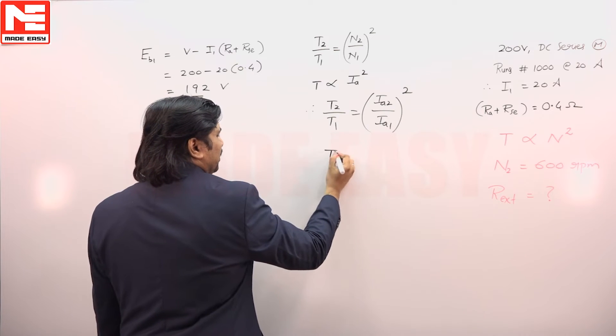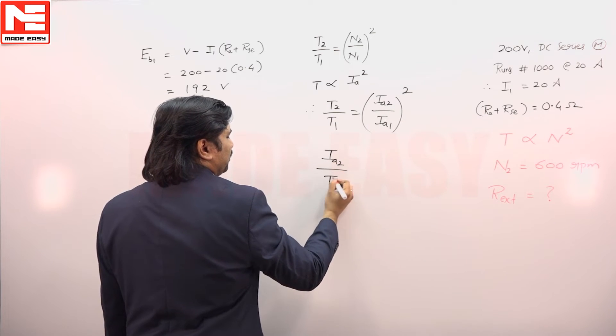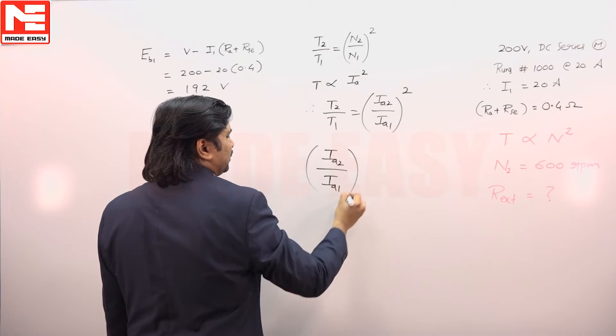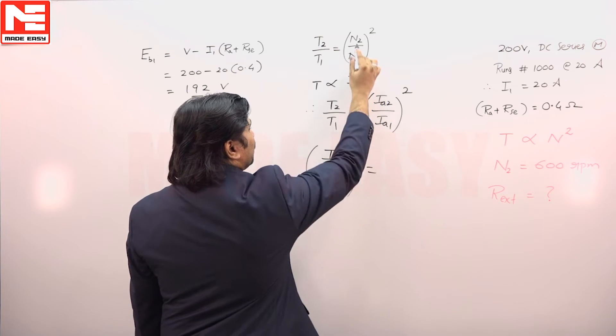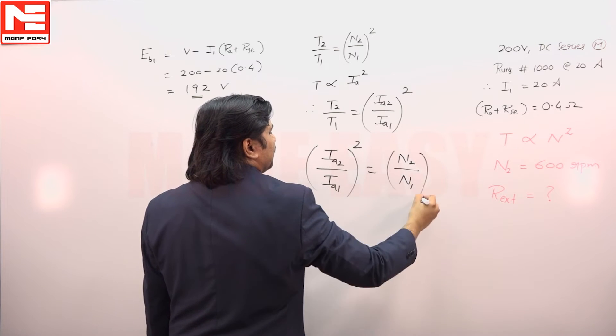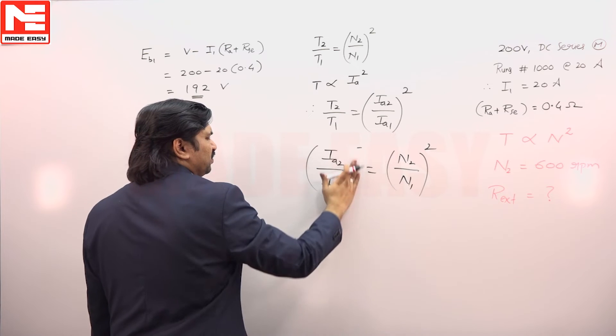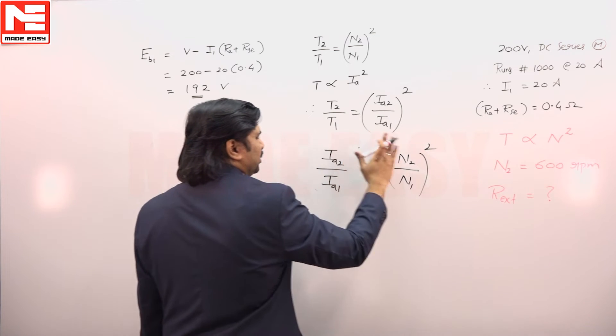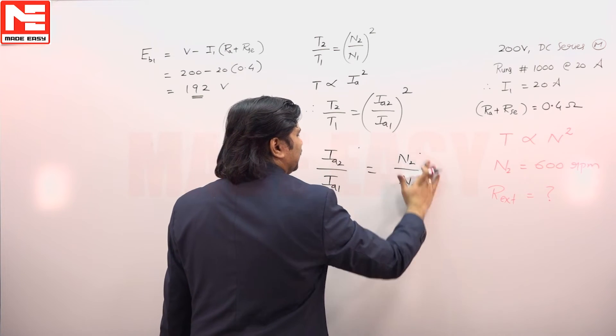Finally, we can say Ia2 by Ia1 square is equal to N2 by N1 square. Therefore, Ia2 by Ia1 is equal to N2 by N1.